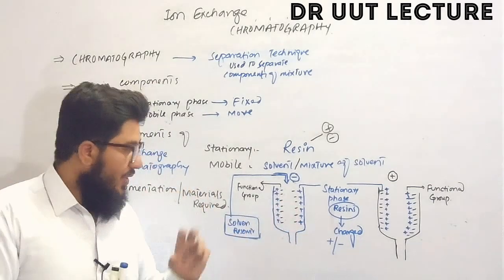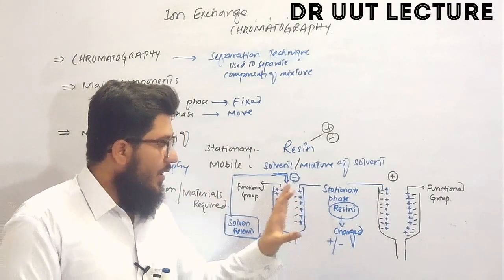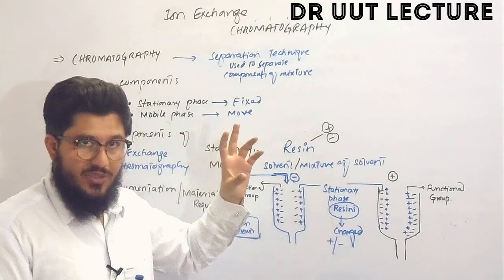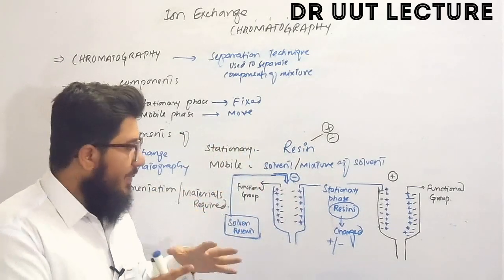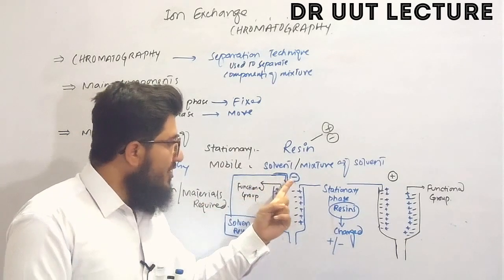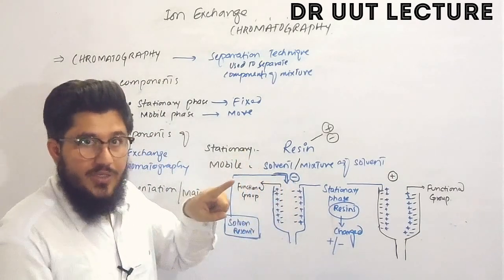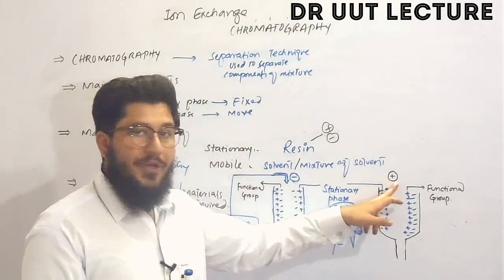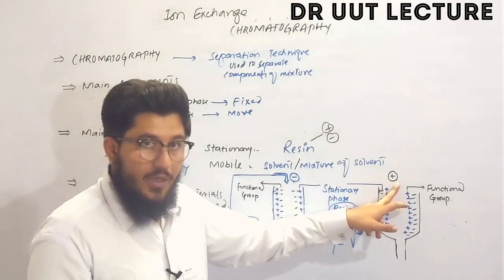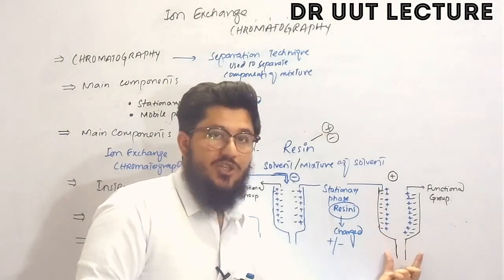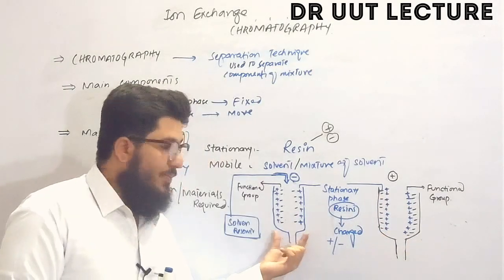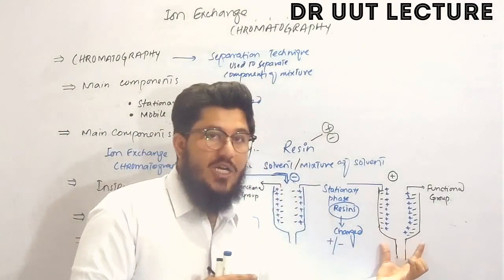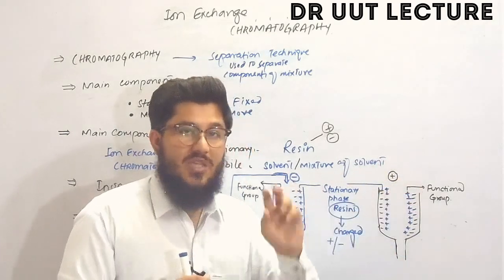Now let's look at how these instruments work. First, the stationary phase: we have positively and negatively charged stationary phases — these resins may be positively or negatively charged. If we want to separate a negatively charged sample, we use the positively charged resin. If we want to separate a positively charged sample, we use the negatively charged resin.